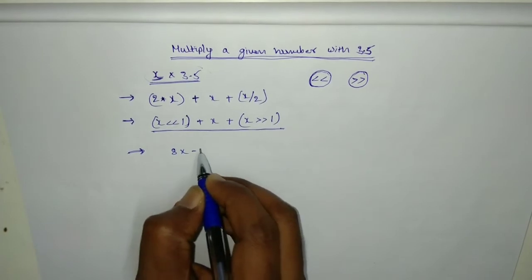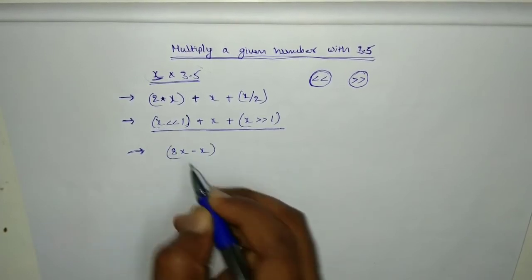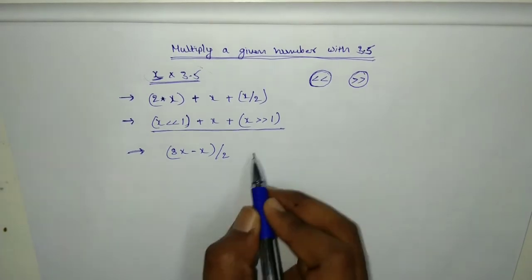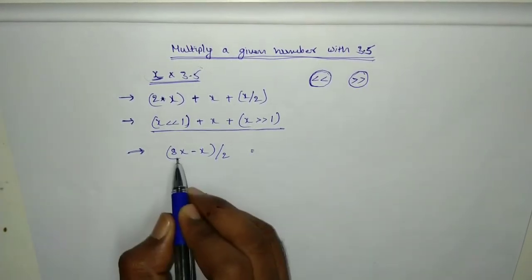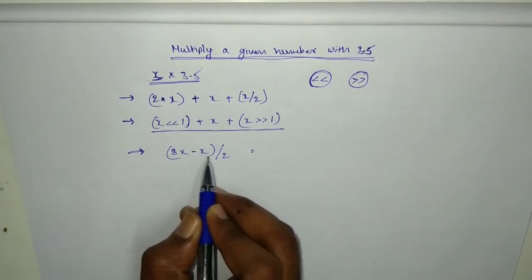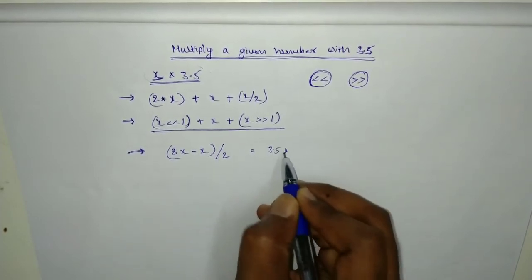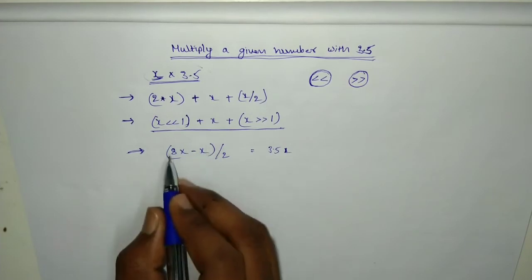8x minus x by 2. So it is equal to 3.5x. Like 8 minus 1 is 7, 7 by 2 is 3.5, so 3.5x. Now try to convert this...